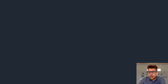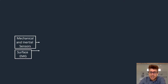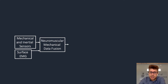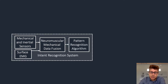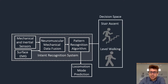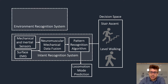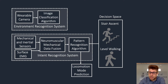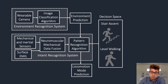The state-of-the-art in automated high-level control uses sensors on the patient and or on the device. These data streams are fused together, and a pattern recognition algorithm predicts the desired locomotion mode from a high-level decision space. However, these sensors can only estimate the current state of the system, which is somewhat analogous to walking blindfolded. In theory, an environment recognition system consisting of a wearable camera and an image classification algorithm could predict the oncoming walking environment prior to physical interactions, improving the speed and accuracy of locomotion mode predictions.